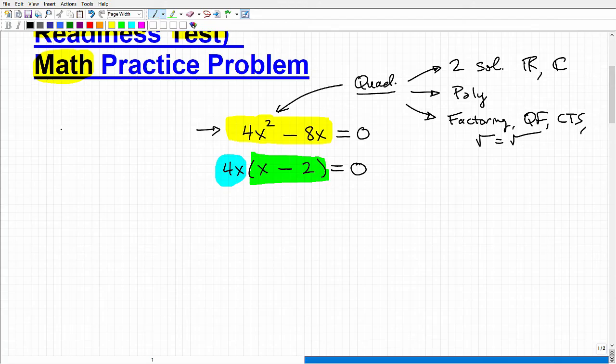If I said to you, hey, I have two things, this times this. I multiplied two things together, and the answer is 0. The product is 0. So what does that tell you about one or both of these things? It tells us that one of these things has to be 0 or both. That's called the zero product property. So we'll use that to an advantage when we're solving equations. So let's go ahead and set each of these equal to 0: 4x equals 0, and x minus 2 equals 0.